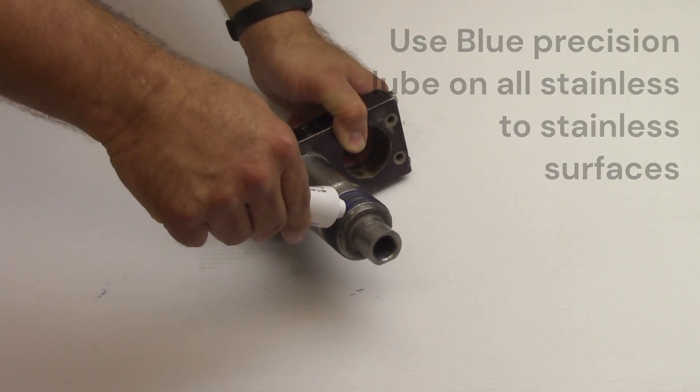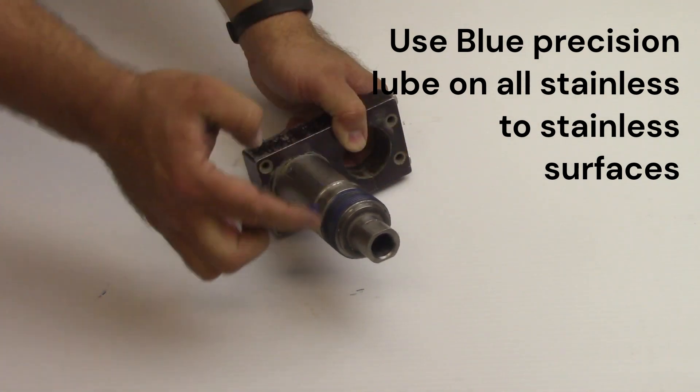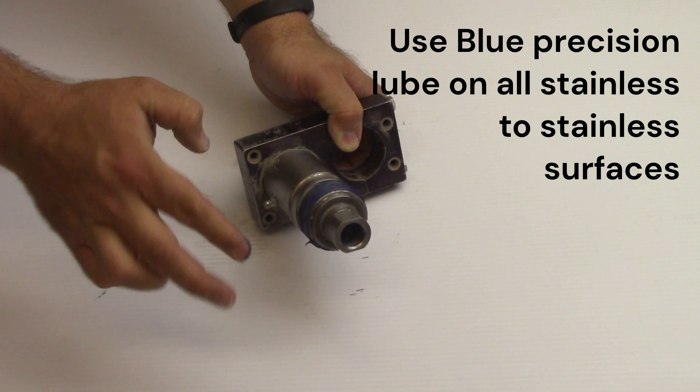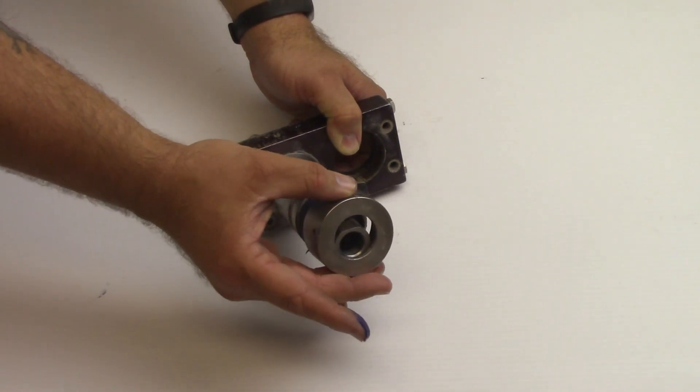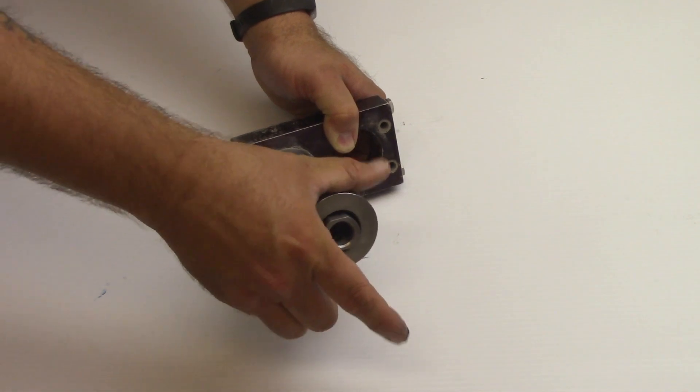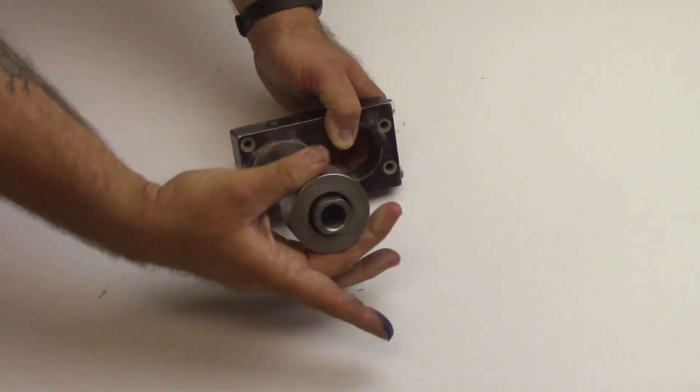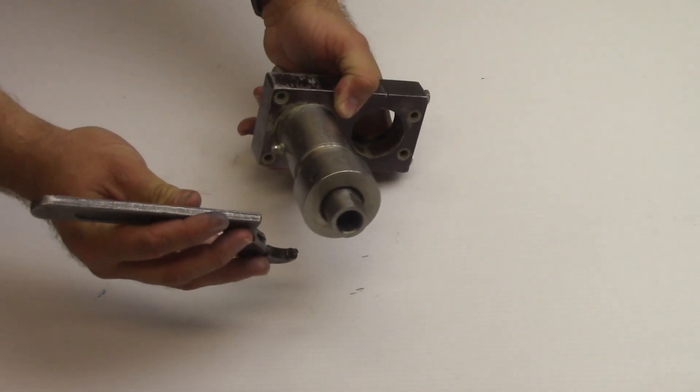Apply precision lube to the swivel body threads. Slide the swivel cap over the seal housing and thread the swivel cap onto the swivel body.